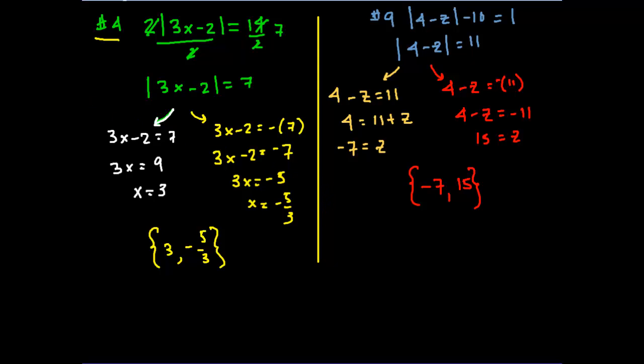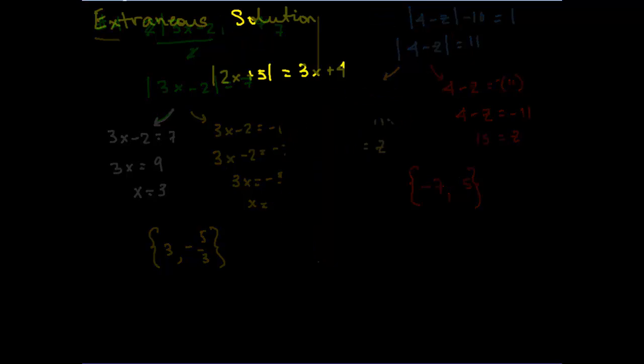One last section to this video and we'll call it a day. And that is this extraneous solution that we talked about earlier. Remember, an extraneous solution is a solution that I'm going to get when I solve this expression. However, when I take the numbers that I get and put them back in for x here and here, this is not going to be equal. It's not going to be true. So let me show you what I mean.